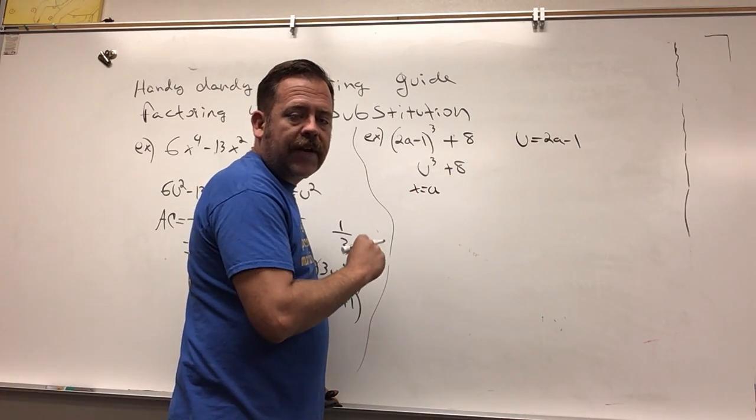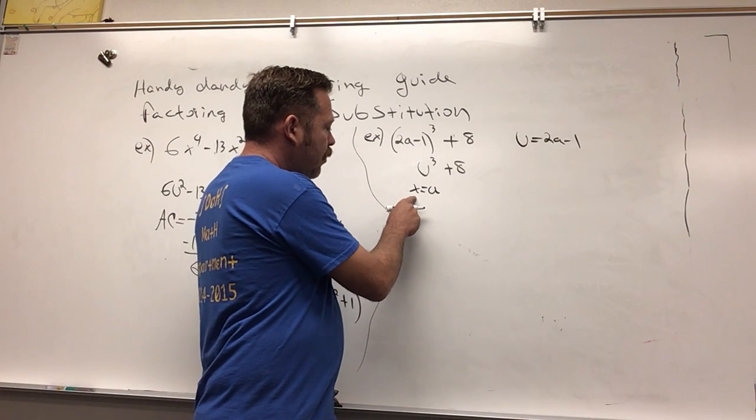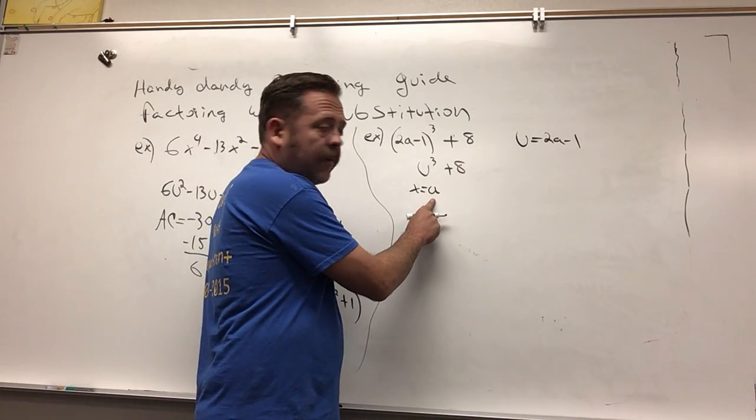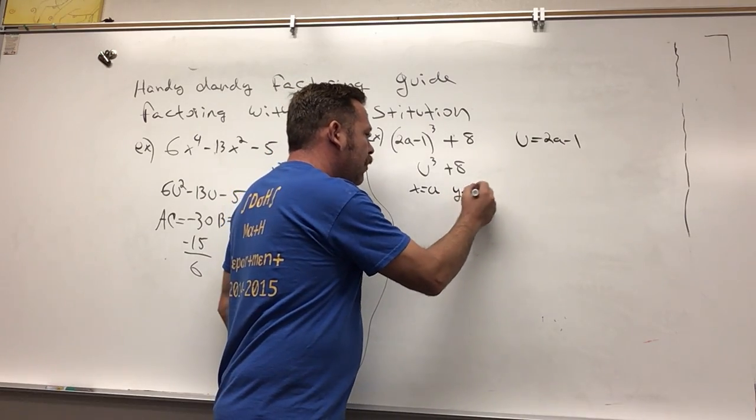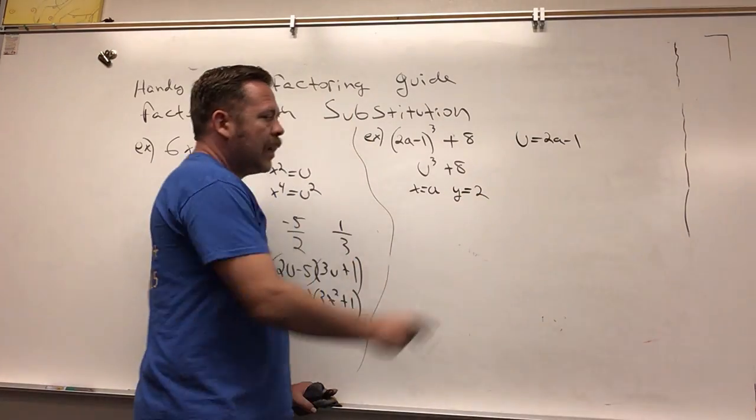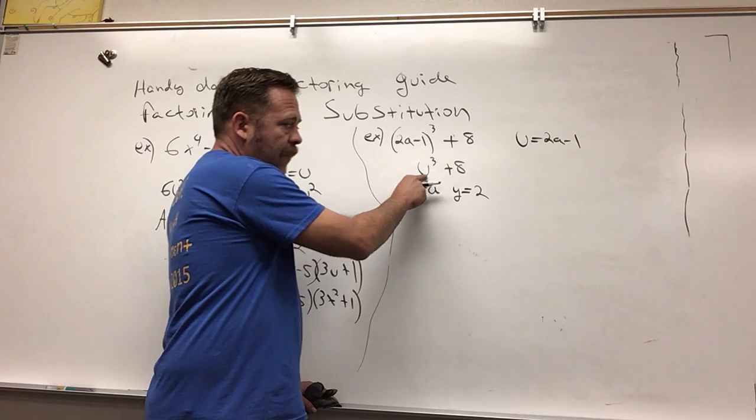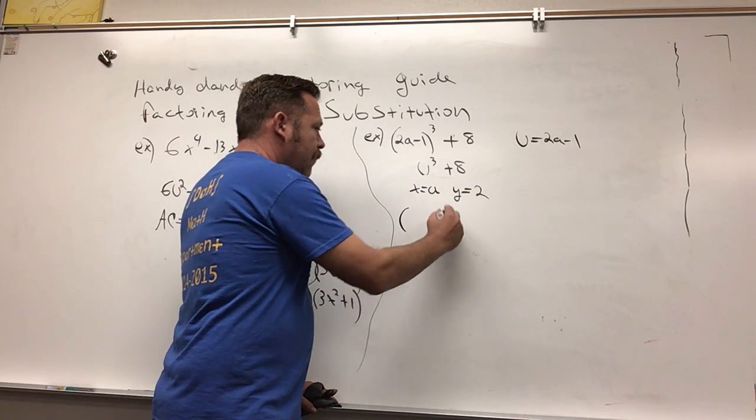My x, if you will, is u, because the sum of cubes formula is in terms of x and y. Now I can replace every x with u, and the cube root of eight is 2, so my y is 2. Now we're going to use that formula to write the factored form.